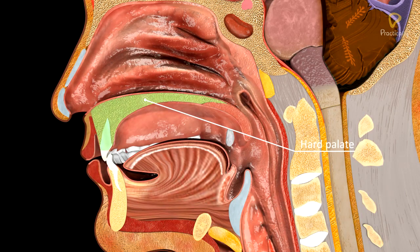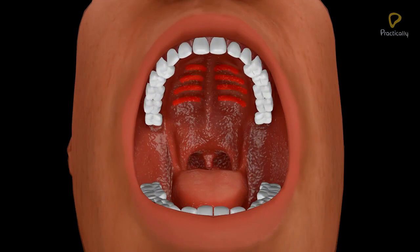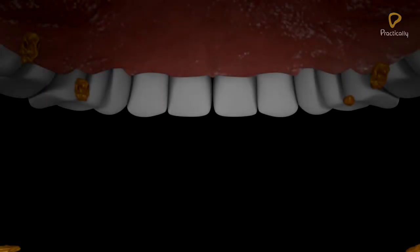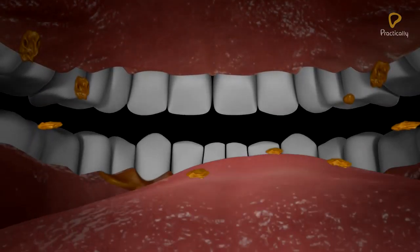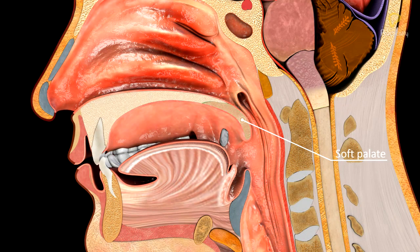The anterior part of the palate is hard, formed by the maxillary and palatine bones. It also shows transverse ridges called the palatine rugae. The rugae provide grip during mastication. The posterior part of the palate is soft.